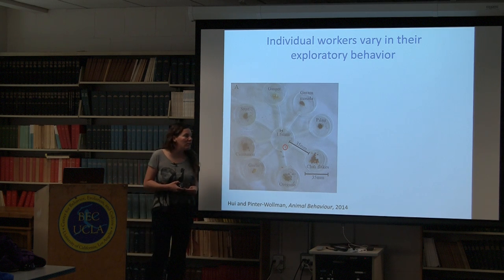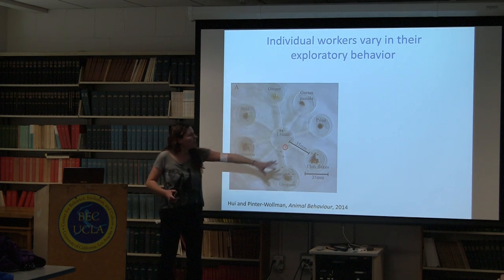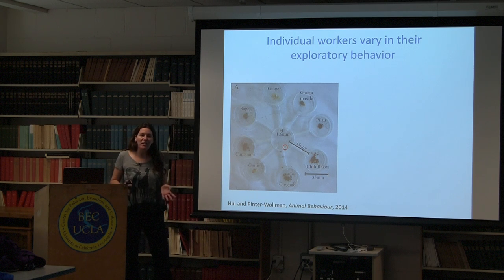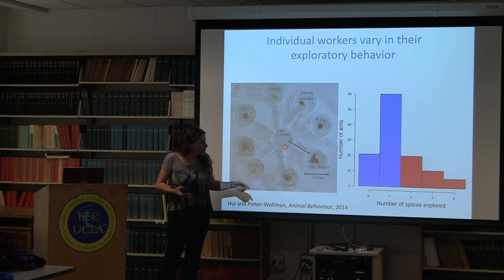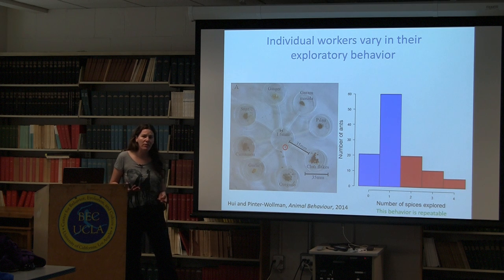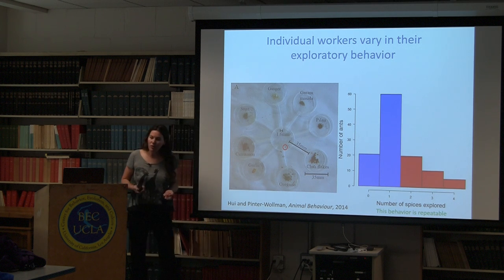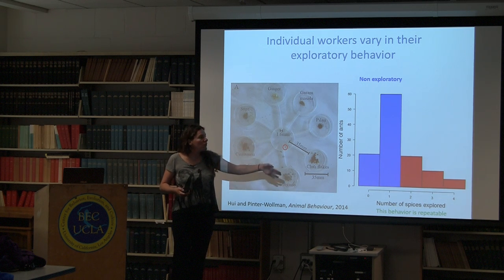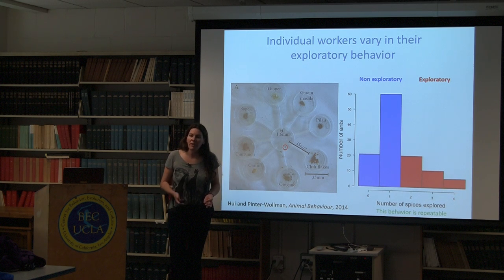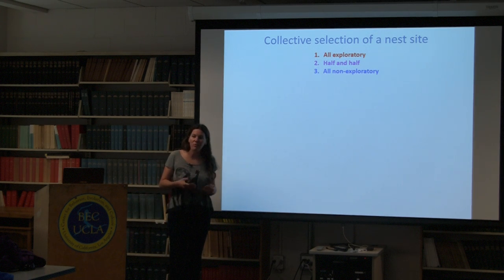We tested individual workers in an eight-armed maze. We put an individual ant in the center, placed different spices all around it, and counted how many spices it explored in five minutes. We found great variation - they explored somewhere from zero to four spices - and this behavior is repeatable. We took the median of this distribution and called everyone below non-exploratory and everyone above exploratory, then created groups of all exploratory, all non-exploratory, and mixed individuals.